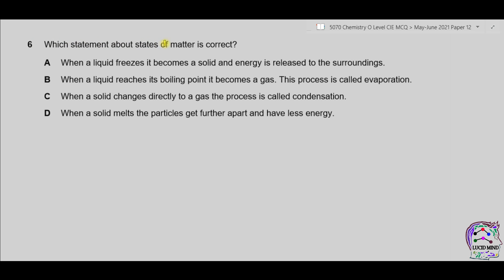Question 6. Which statement about states of matter is correct? Part A: when a liquid freezes, it becomes solid and energy is released to the surroundings — this is true because from liquid to solid, energy is lost as kinetic energy reduces. Part B: when a liquid reaches its boiling point and becomes a gas, this is called boiling, not evaporation. Part C: when a solid changes directly to gas, the process is sublimation, not condensation. Part D: when a solid melts, the particles get further apart and have more energy due to increased kinetic energy. As part A is correct, the answer is A.